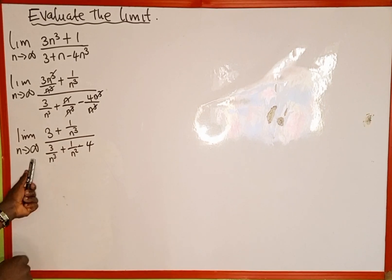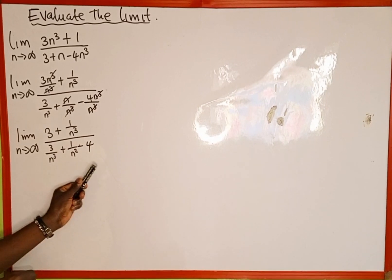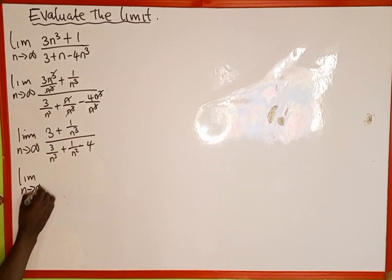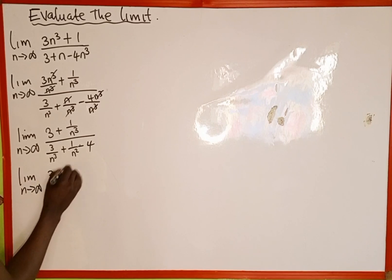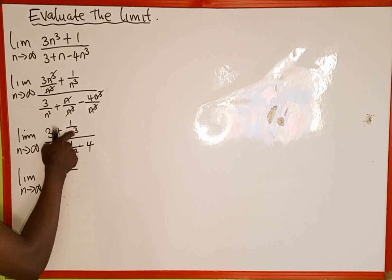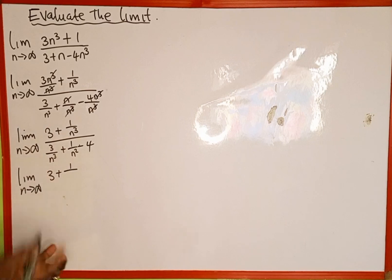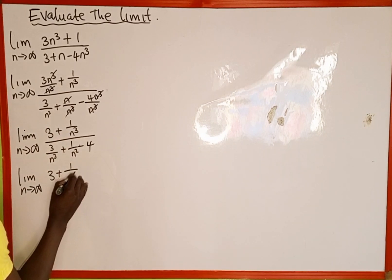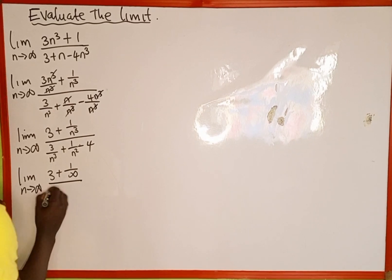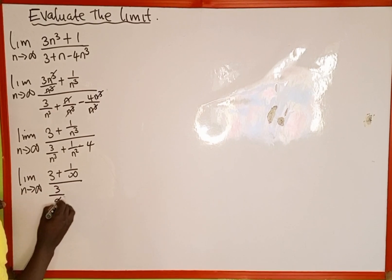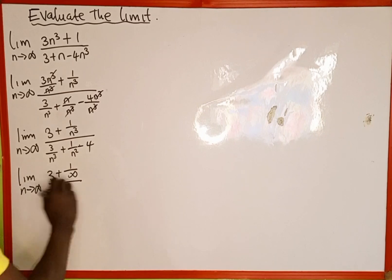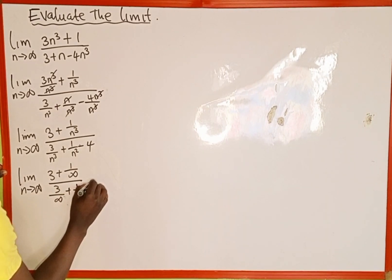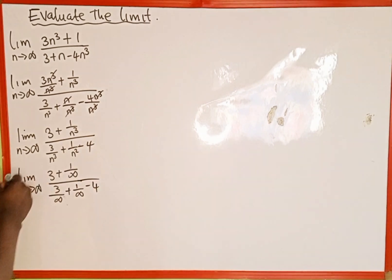The next thing we're going to do is plug in infinity wherever we see n. So we have three, plus 1 over infinity — since infinity raised to the power of 3 is infinity multiplied by infinity multiplied by infinity, which equals infinity — all over 3 over infinity, plus 1 over infinity, minus 4.